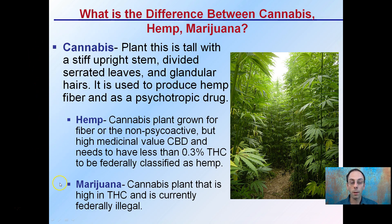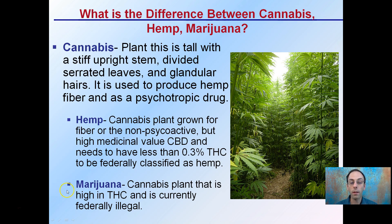Cannabis is a broad category that includes both hemp and marijuana. Hemp specifically is the cannabis plant grown for fiber or other non-psychoactive components. It typically has high medical value due to its CBDs — the cannabinoids it produces. It needs to have less than 0.3% THC to be federally classified as hemp. A plant called marijuana may look very similar to hemp and be almost indistinguishable; what defines it as marijuana is a cannabis plant that is high in THC.